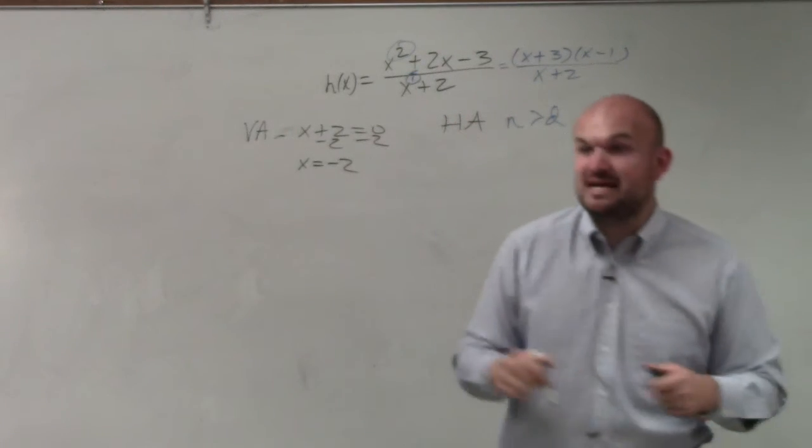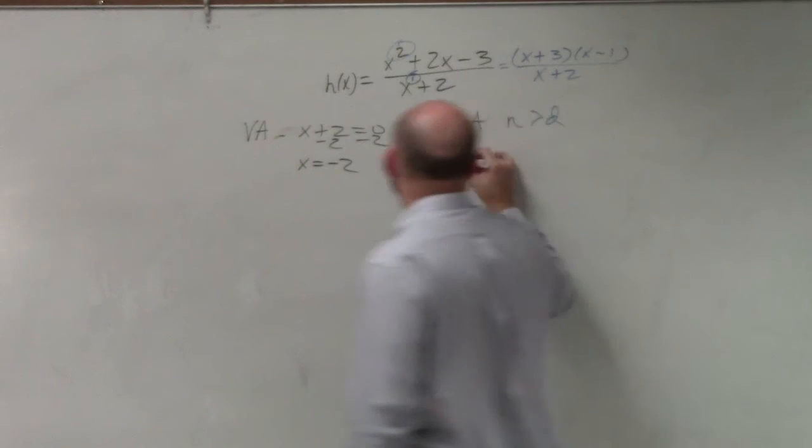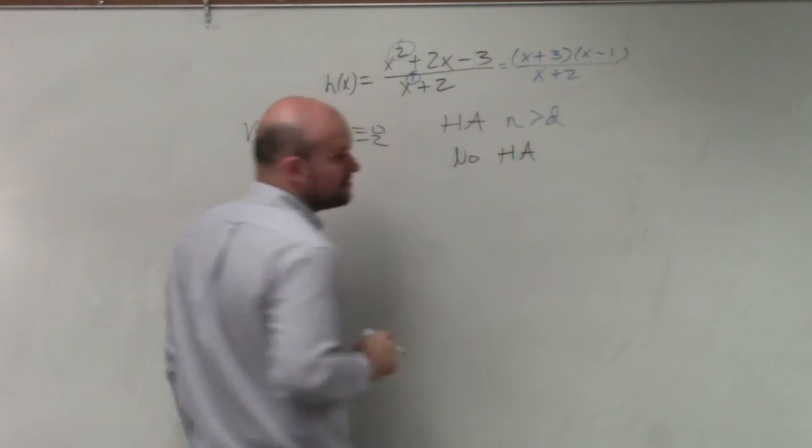Based on the horizontal asymptote test, whenever I have a degree in the numerator that's larger than the degree in the denominator, there is no horizontal asymptote.